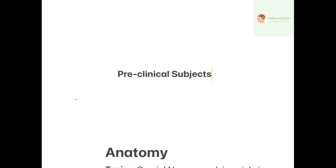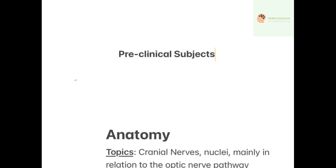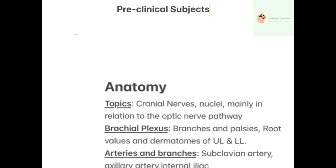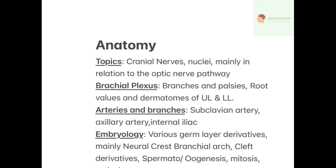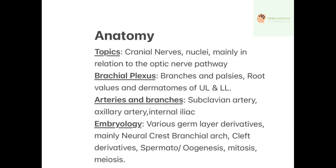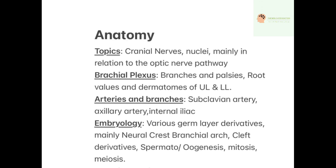The most important topics from anatomy are cranial nerves and nuclei, mainly in relation to the optic nerve pathway, brachial plexus branches and pulses, root values and dermatomes of the upper limb and lower limb.